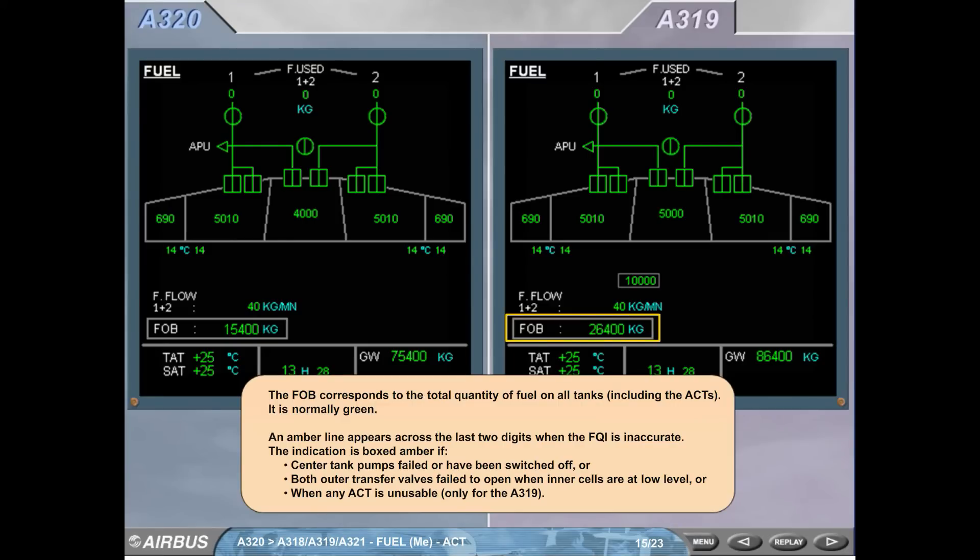The indication is boxed amber if center tank pumps failed or have been switched off, or both outer transfer valves fail to open when inner cells are at low level, or when any ACT is unusable. Only for the A319.